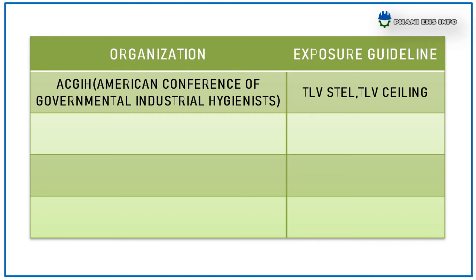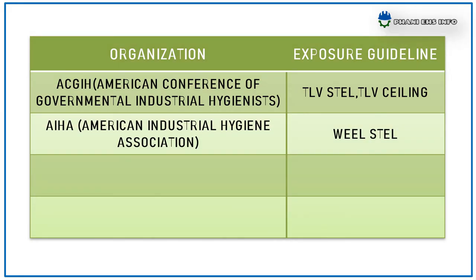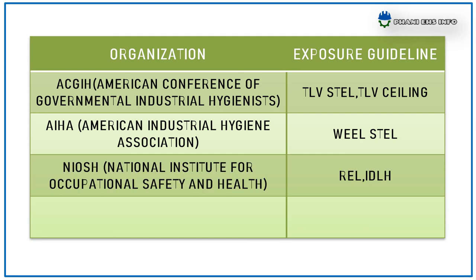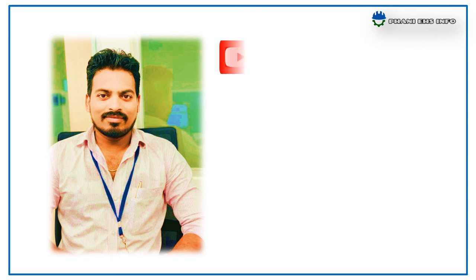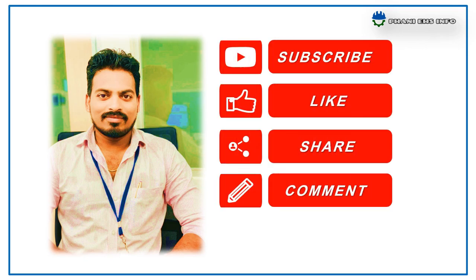Different organizations use different terms for these exposure limits, as shown in this table. ACGIH (American Conference of Governmental Industrial Hygienists) uses TLV, STEL, and TLV Ceiling Value. AIHA (American Industrial Hygiene Association) uses WEEL and STEL. NIOSH (National Institute for Occupational Safety and Health) uses REL and IDLH. OSHA (Occupational Safety and Health Administration) uses PEL (Permissible Exposure Limit), TLV, STEL, IDLH, and Ceiling values. Thanks for watching.